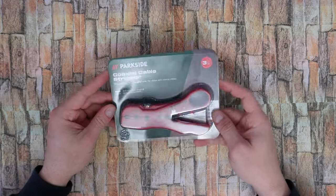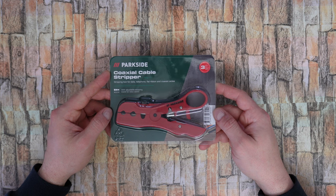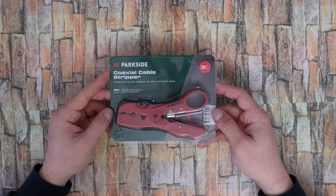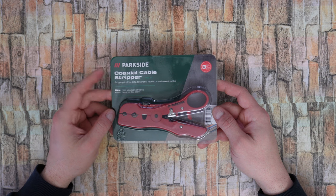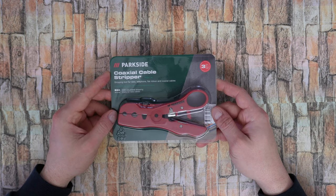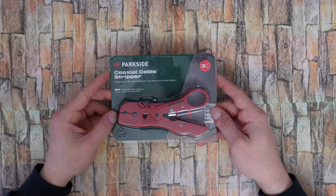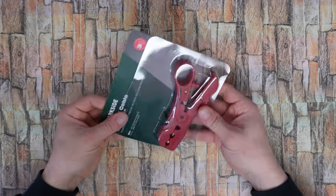Hello my viewers and welcome back to another unboxing, viewing and testing. Today I have this coaxial cable stripper from Parkside, the model PKXA2A1 stripping tool for data, telephone, flat ribbon and coaxial cables with a three years warranty. It has an adjustable stripping blade for data cables. So let's open the box and find out more about this product and how we can use it.